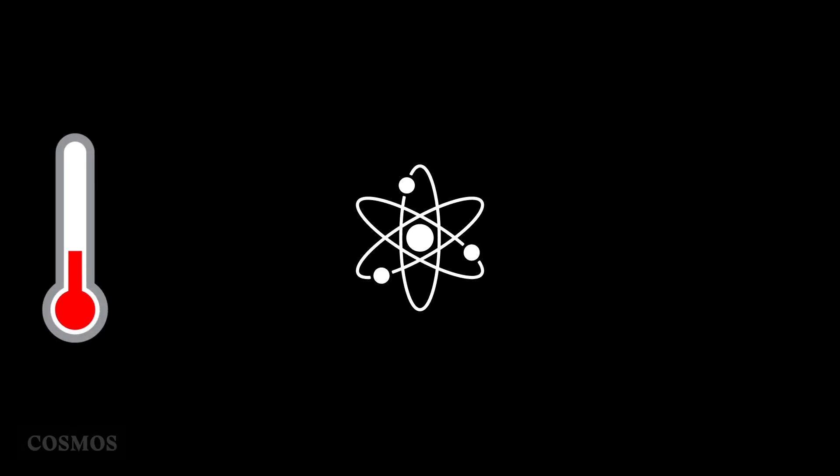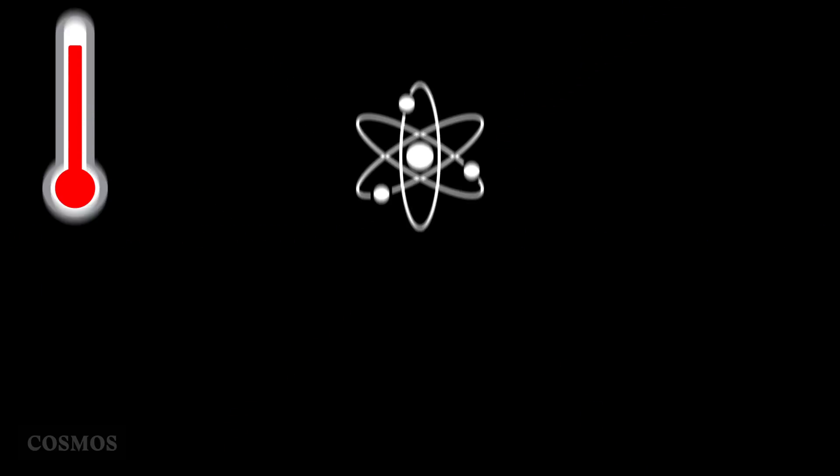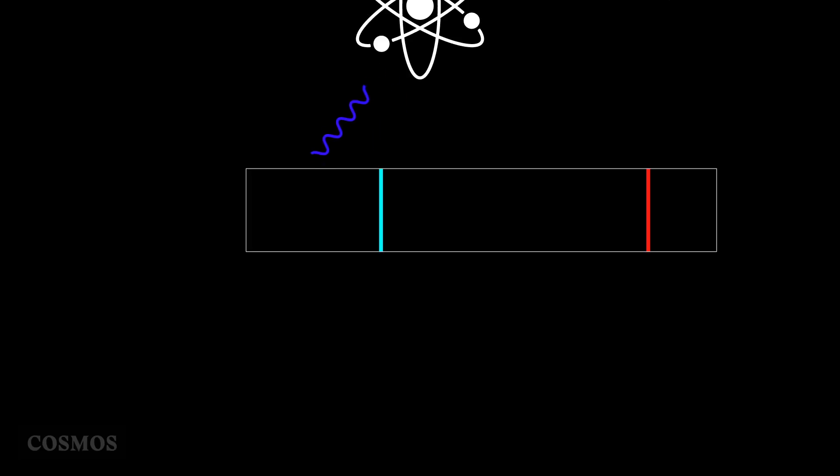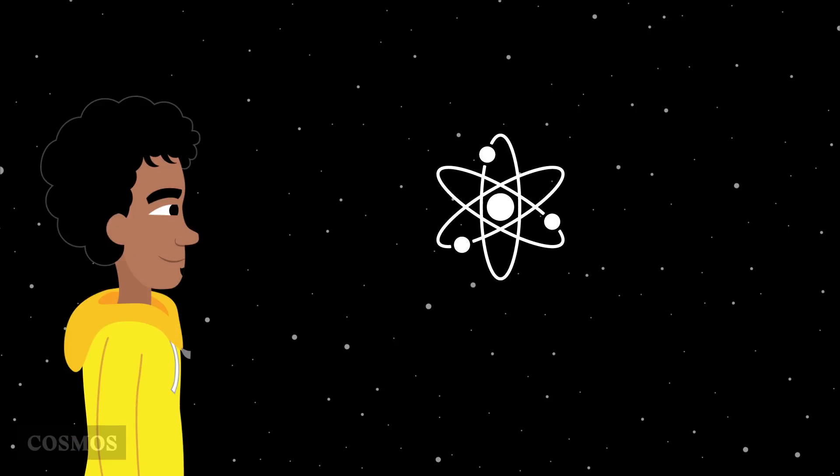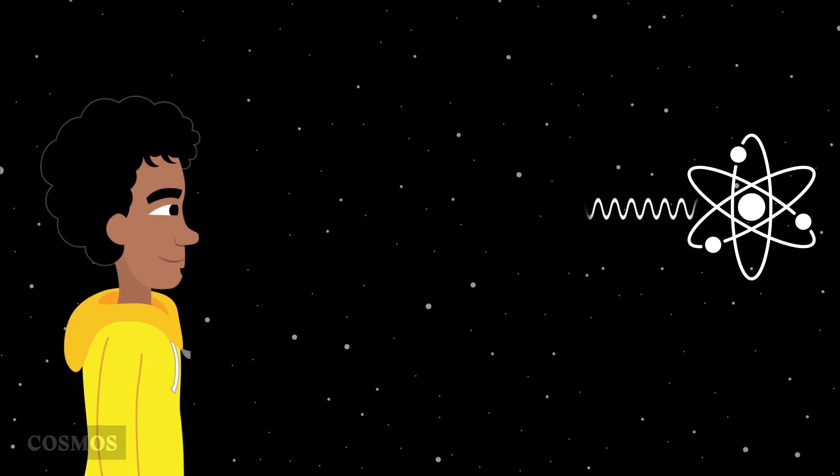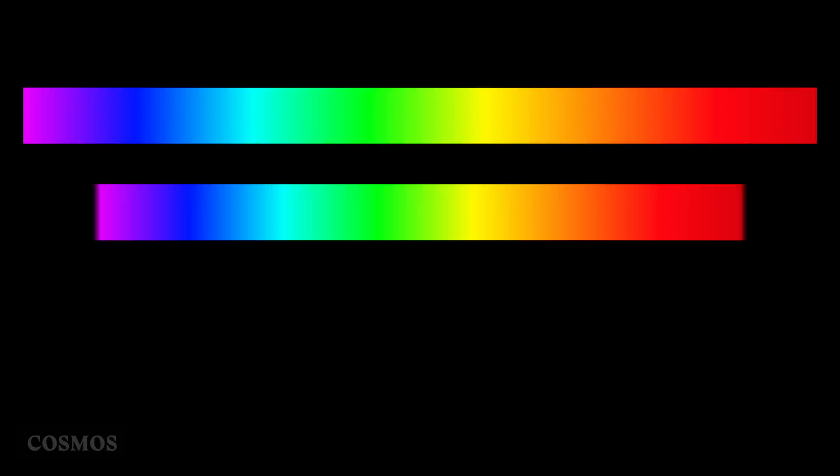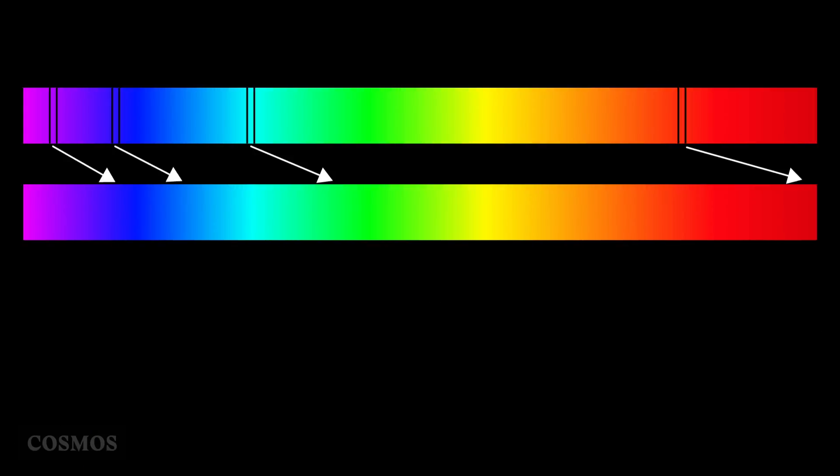When atoms are heated to high temperatures, they emit light at specific wavelengths, so each element has a signature colour. But if the atoms are moving away from you, the light waves get stretched. For visible light, this means they move towards the red end of the spectrum.